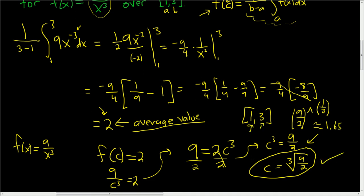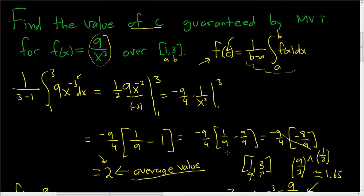So that's the value of C guaranteed by MVT. So again, whenever you're doing a mean value theorem problem or an average value problem, you can just use this formula. This is the average value.